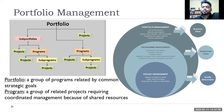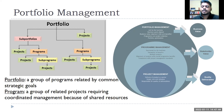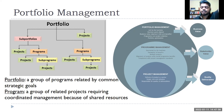There might be a functional program manager handling those projects. For example, an HR program manager handling projects related to training employees to inspect households for electricity theft across different states — each state might have one project because language, attitude, and behavior differ by state. So we have an overall portfolio objective at the enterprise level, under which we have different programs for different business units.